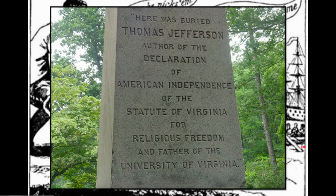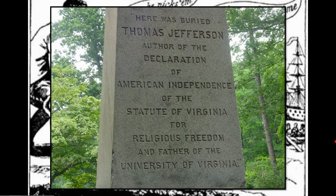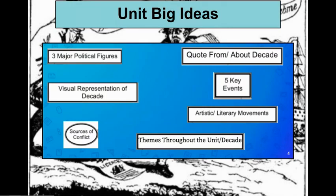It's interesting to note that Thomas Jefferson's tombstone lists him as author of the Declaration of Independence, author of the Statute of Virginia for Religious Freedom, and father of the University of Virginia — but President is nowhere on it. That tells you what he thought was most important in his life. Add these topics to your Unit 3 Big Idea Understandings with key events, sources, and themes.